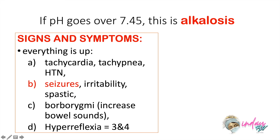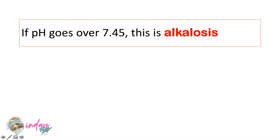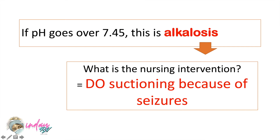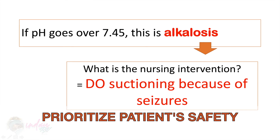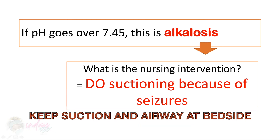So imagine that your patient is having irritability, seizures, vital signs are high, and there could be involvement of the sympathetic nervous system. There is also hyperreflexia that is grade 3 and 4. However, in alkalosis, though the pH is high, the potassium will go in the opposite direction. So in alkalosis, the potassium level is low — that is hypokalemia. If you are caring for an alkalotic patient, your nursing intervention will include suctioning because of the presence of seizure, and note for patient safety. Keep your suctioning and airway kit at bedside and do your nursing interventions according to the needs of the patient.